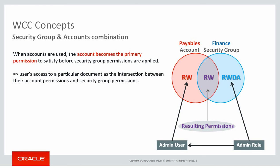If both security group and accounts access are given to a user, the account-level permission takes precedence. For example, if an admin user inherits the admin role with read, write, delete, and admin access under the Finance security group, but is also directly given access to the Payables account with read and write permission, the read-write access from the account takes precedence and becomes the primary permission. This completes part one of this session. In part two, we will go through the demonstration of the WCC delivery channel. Thank you.